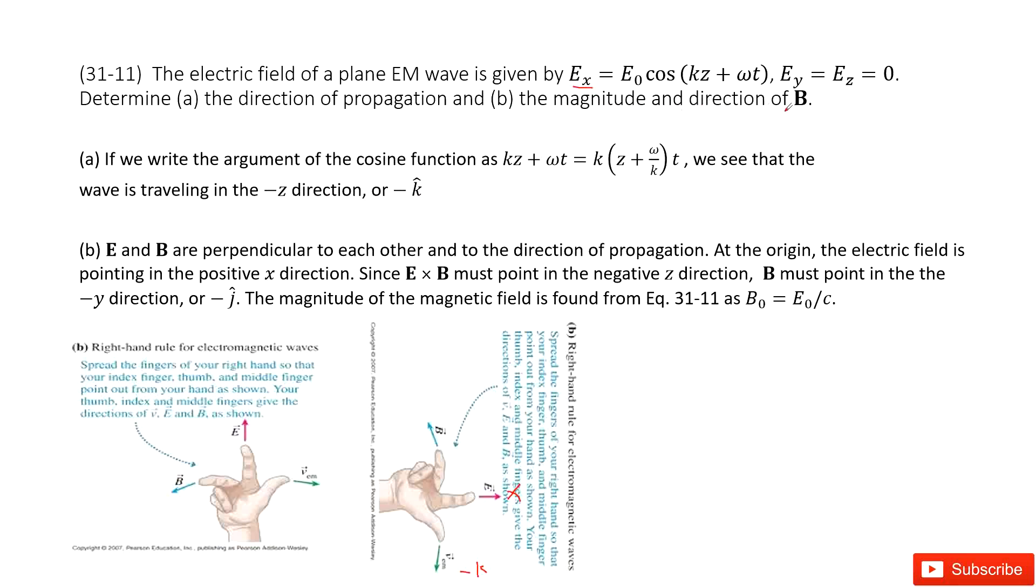Next, the magnitude and direction of B. So what is B? Negative Y. If you use your right hand, you will find it.